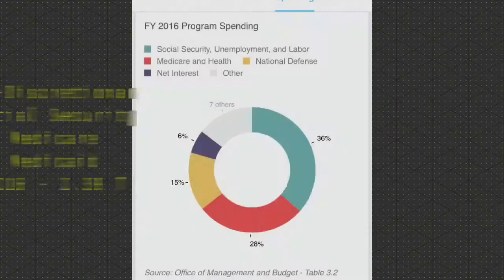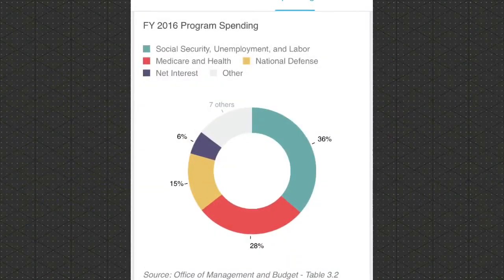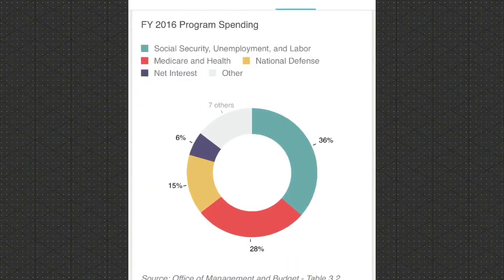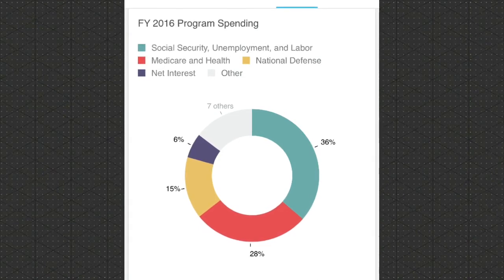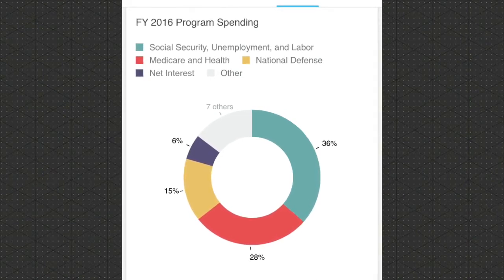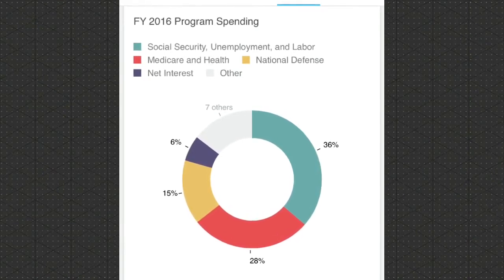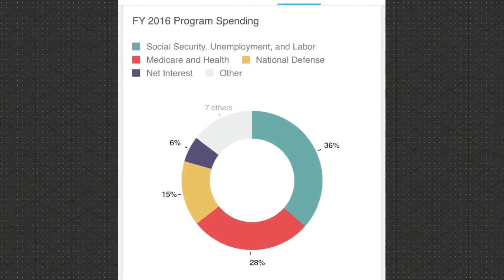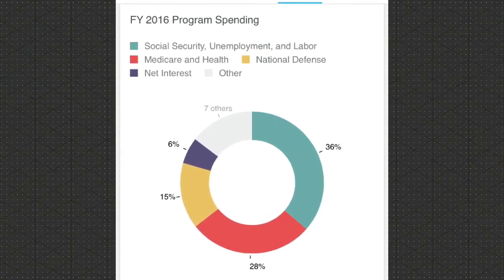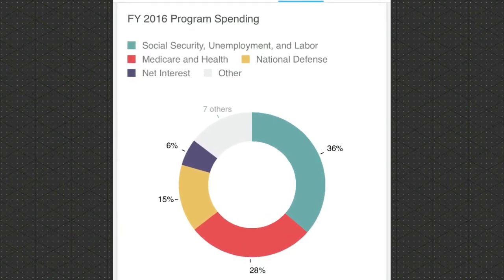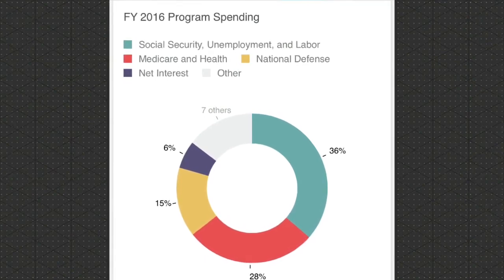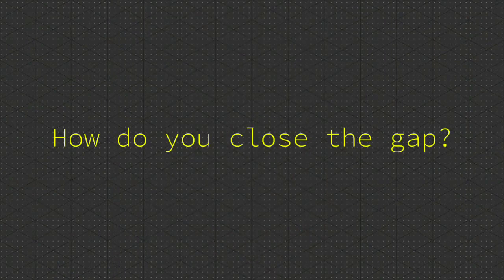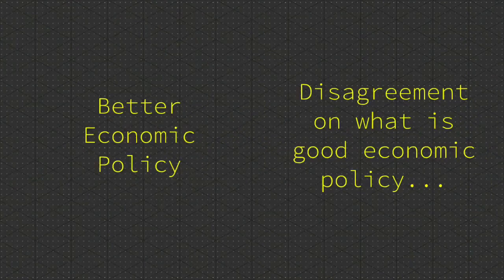Looking at a pie chart of 2016 spending, the military budget was fifteen percent of the budget, while Medicare and other health care spending was twenty eight percent, and Social Security, unemployment, and labor made up thirty six percent of the budget.